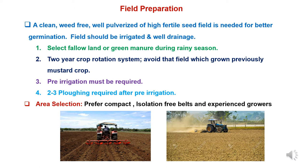The first step is field selection and field preparation. For mustard hybrid seed production, we have to select a clean, weed-free, and well-fertilized field of high fertile soil, which is needed for better germination and good crop growth. The field should have both irrigation and well drainage facilities. We have to select fallow land or green manure crop grown during rainy season, and there should be a two-year crop rotation system followed. We have to avoid fields where previously a mustard crop was grown.